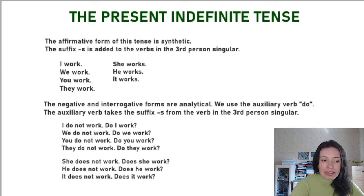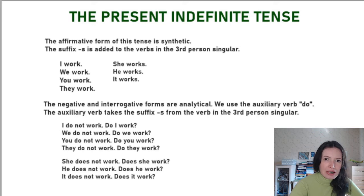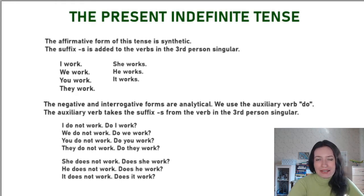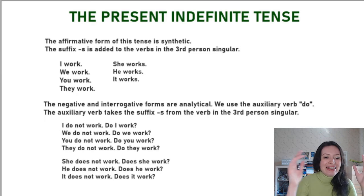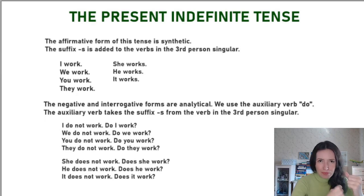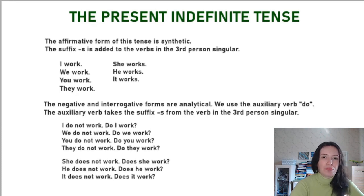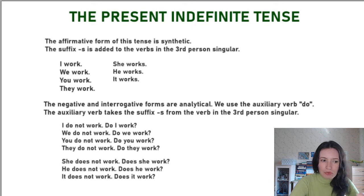Another interesting fact is that unlike the affirmative form, the negative and interrogative forms are analytical. That means that there is an auxiliary verb — or some auxiliary word — where one word takes the grammatical meaning and another word takes the lexical meaning and they are separated. So for example, the negative form is 'I do not work', where 'do' is the auxiliary verb, 'not' is the negative particle, and 'work' is the notional verb.